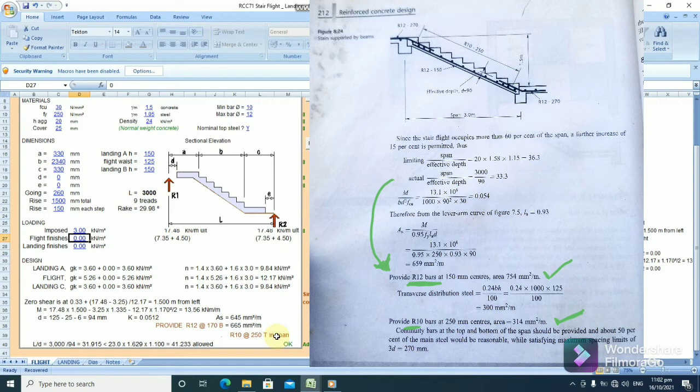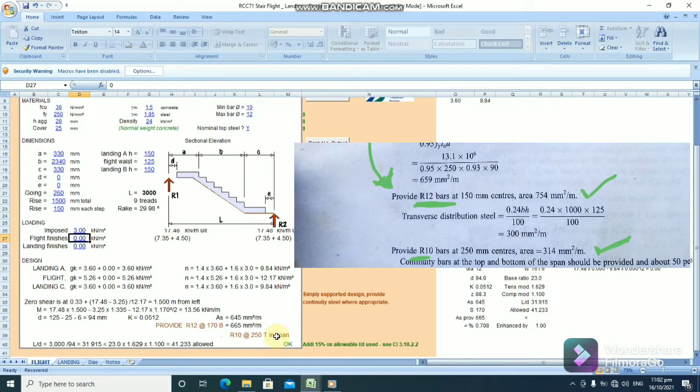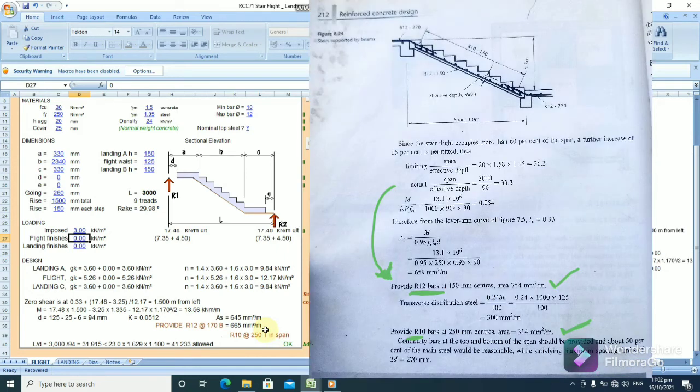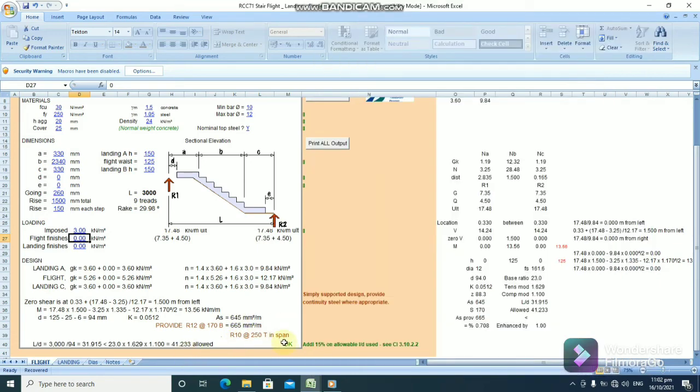Now, let's look at the answers from this textbook. It says R12 bars at 150 centers with an area of steel of 754 millimeters squared per meter. Which is, of course, very much similar to this design. And, we can see that everything about this design is okay.